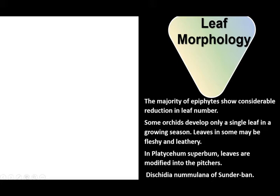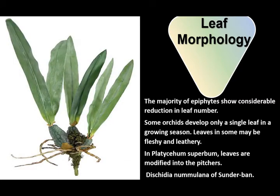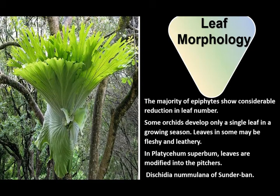Let us see the leaf morphology of epiphytes. The majority of epiphytes show considerable reduction in leaf number. Some orchids develop only a single leaf in a growing season — here you can see an orchid with two leaves and one with only a single leaf. Leaves in many epiphytes may be fleshy and leathery.